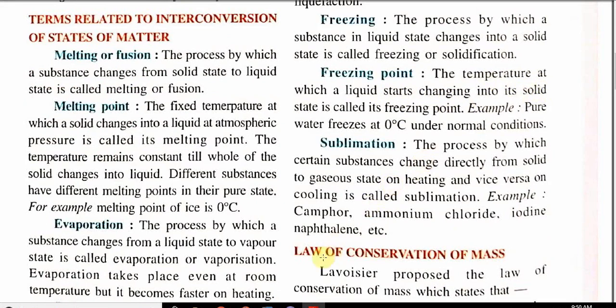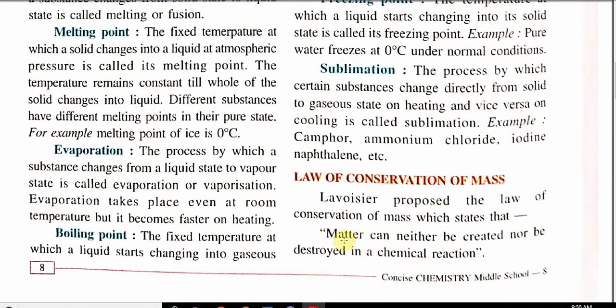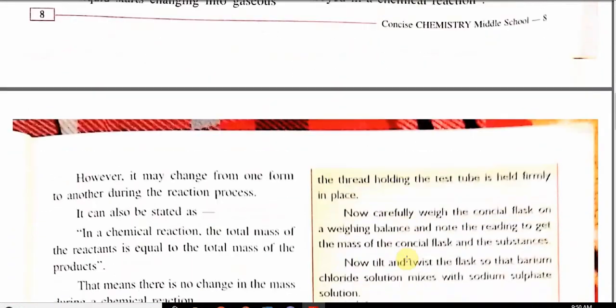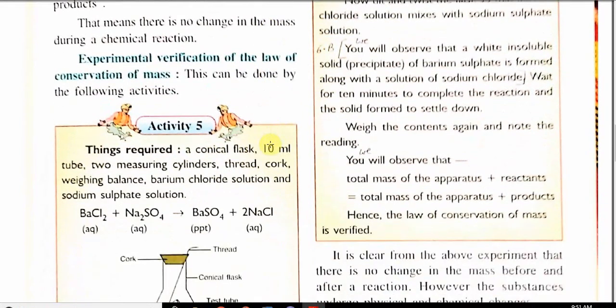Now coming to next point is law of conservation of mass. Lavoisier proposed the law of conservation of mass. He proposed that matter can neither be created nor be destroyed in a chemical reaction. Matter can only change from one state to another state. This law can also be stated that in a chemical reaction total mass of reactant is equal to total mass of product. It means there is no change in mass. In practical application when you measure mass you will see change, but if there is a decrease or increase in mass then it implies that the product has changed its state.